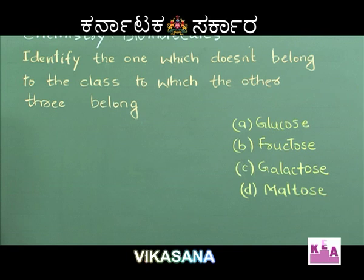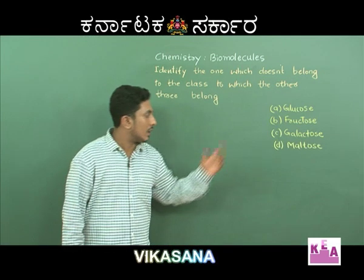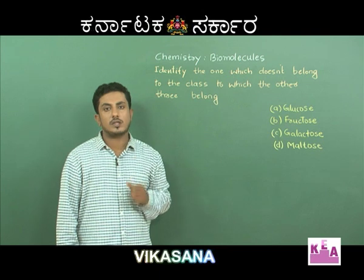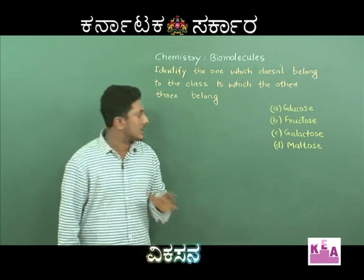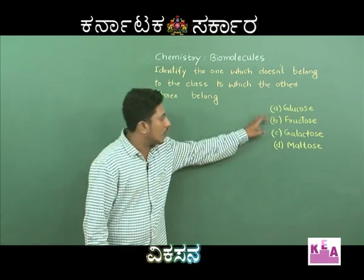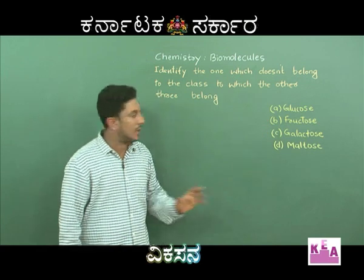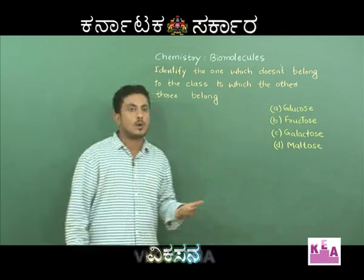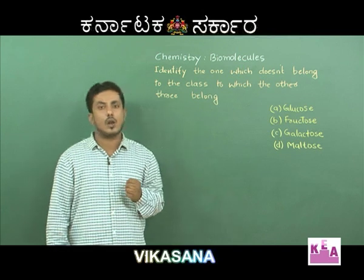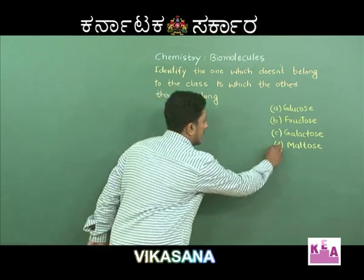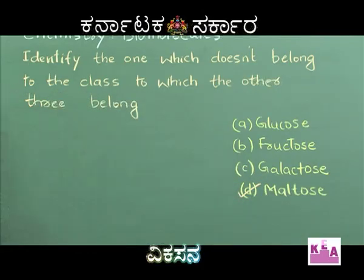Out of the four, glucose, fructose, and galactose are all monosaccharides, whereas maltose is a disaccharide. It contains two monosaccharide units — both are alpha-D-glucose units. Hence, glucose, fructose, and galactose belong to one class. Maltose is a disaccharide, or you can refer to it as an oligosaccharide. So option D is the right answer.